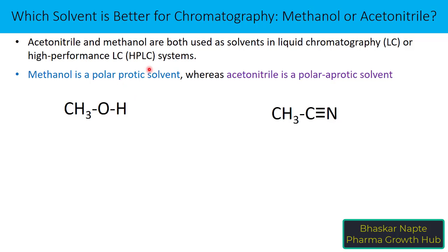Why is methanol called a protic solvent? A protic solvent is one that has a hydrogen atom directly connected to an electron-withdrawing atom like oxygen. Methanol meets this requirement, so methanol is a protic solvent. The specialty of a protic solvent is that it can form hydrogen bonds with another compound because it has a hydrogen atom available for donation.